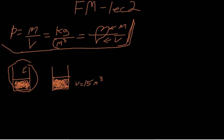Well, if the volume is the same — if the meter cubed is the same — then the kilograms change. The mass of cooking oil is considerably less than the mass of water. So if you have kg over meter cubed and you have less mass for cooking oil, then your density will obviously be less. That's one way of explaining it.